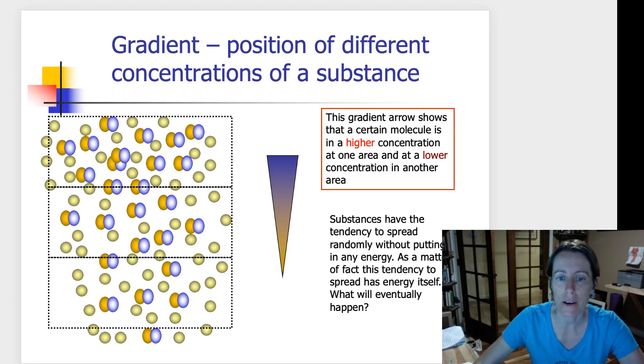In this slide here, you can see there's a mixture of two substances. There's the single yellow circles, and they're pretty evenly spread through these three regions. And then there's this other substance here that is like a double. It's a different molecule. They're mixed together.